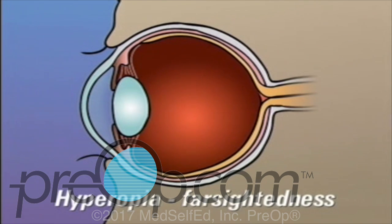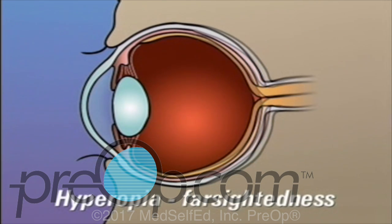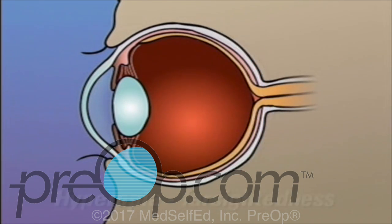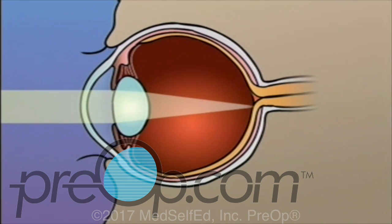Hyperopia, or farsightedness, occurs when the shape of the eye is too short. In this case, light rays are focused on a point behind the retina.